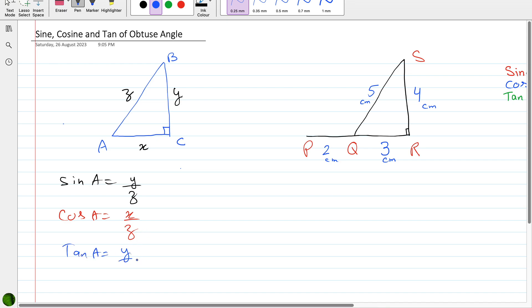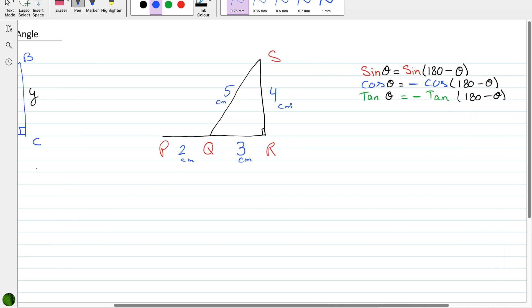Now look at this second triangle. If the examiner asks you about the acute angle at Q, sine of Q will be perpendicular over hypotenuse, cos of Q will be base over hypotenuse, and tan of Q will be perpendicular over base.